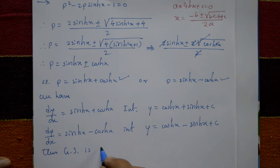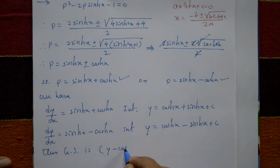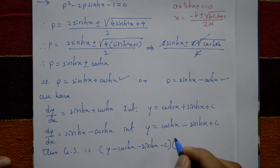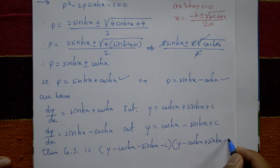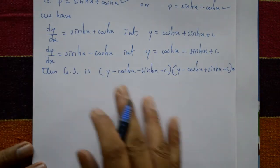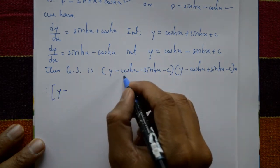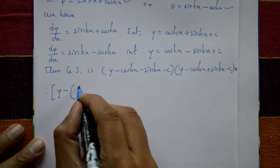The general solution combines both cases. Shifting terms to the left-hand side: (y - cosh(x) - sinh(x) - C)(y - cosh(x) + sinh(x) - C) = 0. Now we expand using standard hyperbolic definitions: cosh(x) = (eˣ + e⁻ˣ)/2 and sinh(x) = (eˣ - e⁻ˣ)/2.